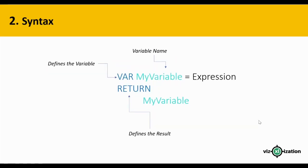Now let's look at the basic syntax for a variable. On the left side we have the keyword VAR, which defines the variable. The other key part is the keyword RETURN, which defines the result. We also need a variable name. There is something really important: no spaces are allowed between words in variable names.